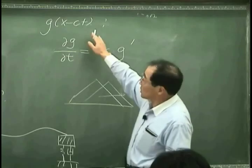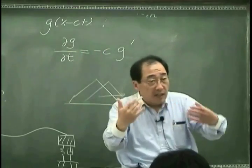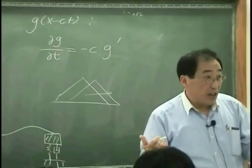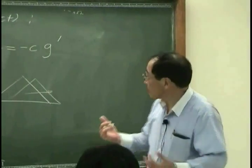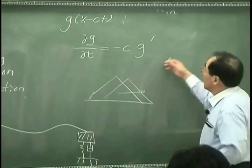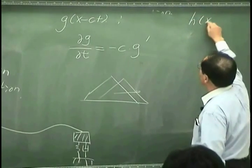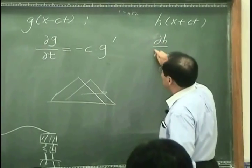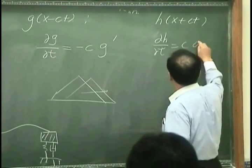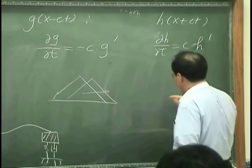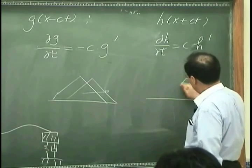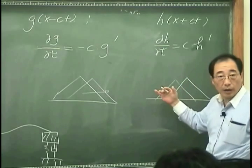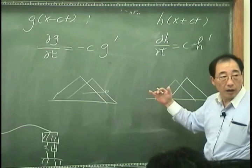So this expression actually represents what physically actually happened. And H(x plus ct), dH/dt is C H prime, therefore when we have this and it has to move this way.